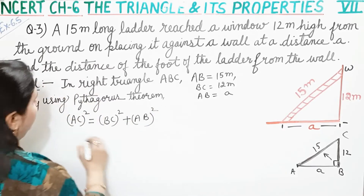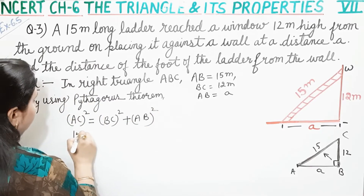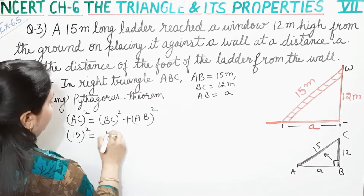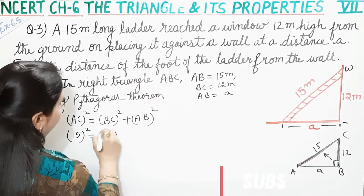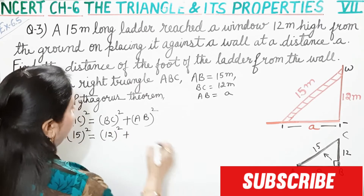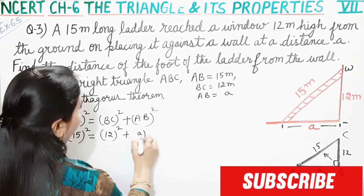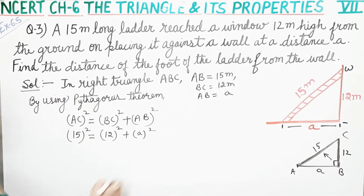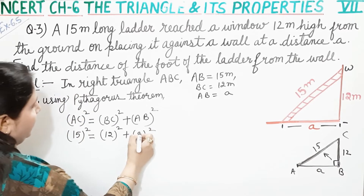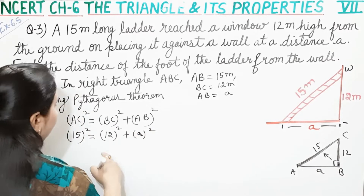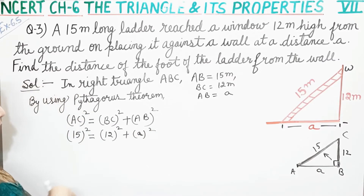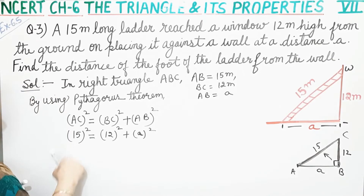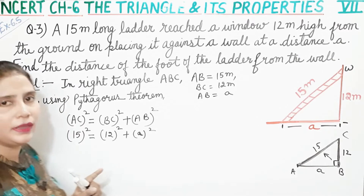AC ka square humein given hai 15, yani 15 ka square. BC ka square humein given hai 12, yani 12 ka square plus AB. AB humein diya hua hai A, A ka square. Humein A ka square chahiye, yani ki humein A chahiye. To hum kya karenge? 12 ke square ko udhar lete hain, aur pehle in ko solve kar lete hain — toh 15 ka square kitna hota hai?